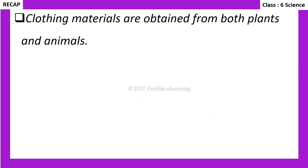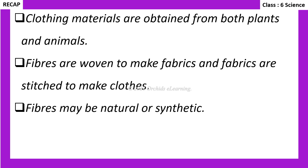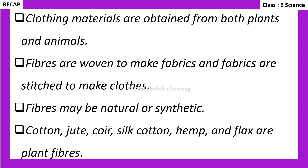Recap: Clothing materials are obtained from both plants and animals. Fibers are woven to make fabrics, and fabrics are stitched to make clothes. Fibers may be natural or synthetic. Cotton, jute, coir, silk cotton, hemp, and flax are plant fibers.